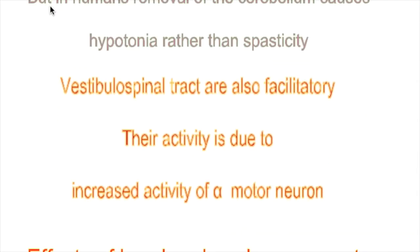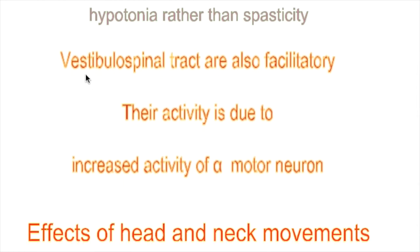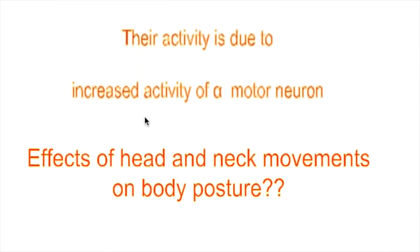The cerebellar inhibitory area is still present, but removal of the cerebellum increases rigidity in animals. In humans, however, removal of the cerebellum causes hypertonia rather than spasticity. The vestibulospinal tract is another facilitatory tract, and its activity is due to increased activity of alpha motor neurons.